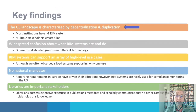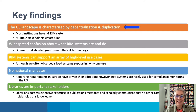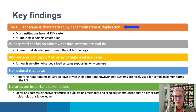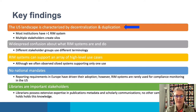Some high-level findings from this report: not surprising to anybody listening, the U.S. landscape is characterized by decentralization and duplication. There are a lot of stakeholders all solving their own problems, and as a result most institutions have more than one RIM system and they probably don't talk to each other. There's also a lot of confusion about what RIM systems are — many three- and four-letter acronyms — and we want to bring them all under the central RIM umbrella. RIM systems can support an array of high-level use cases, and there are no national mandates in the U.S. driving RIM practice as we see in Europe.